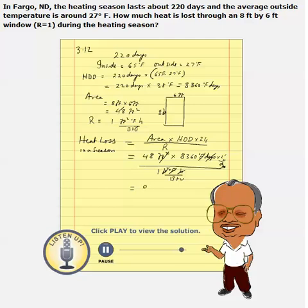When you do this math, it comes out to be 9,630,720 BTUs. This is for one full season.